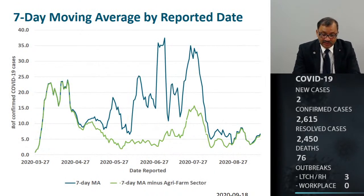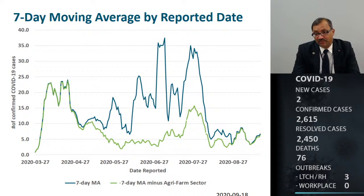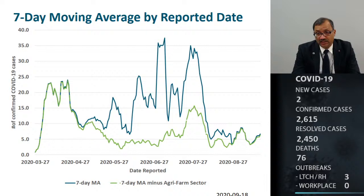Another way to look at how we are doing is with a 7-day moving average. There are two lines: the blue line looks at all cases using a 7-day moving average, showing a peak in late March and April and then a relative decline. Our 7-day moving average has remained low in the past month due to low cases in the agri-farm sector. The green line shows what the trend looks like if we remove agri-farm workers — the 7-day moving average declines dramatically, especially in May and June. Currently, those two lines are combined and essentially represent the entire community.